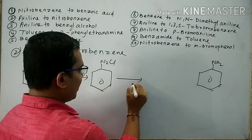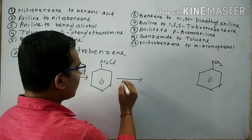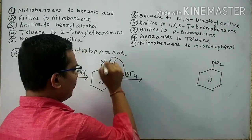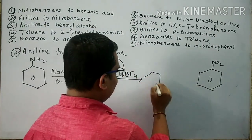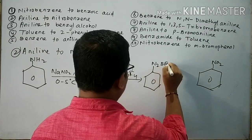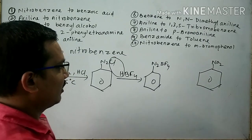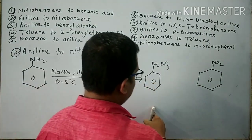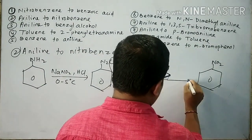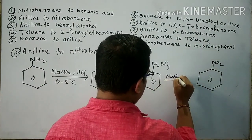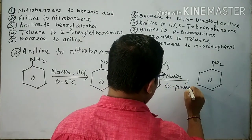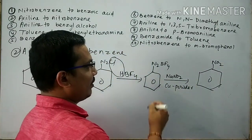Now BDC is subjected to reaction with HBF4; one HCl molecule is removed, then benzene diazonium fluoroborate is formed. This benzene diazonium fluoroborate is subjected to reaction with NaNO2 and copper powder, then nitrobenzene is formed.